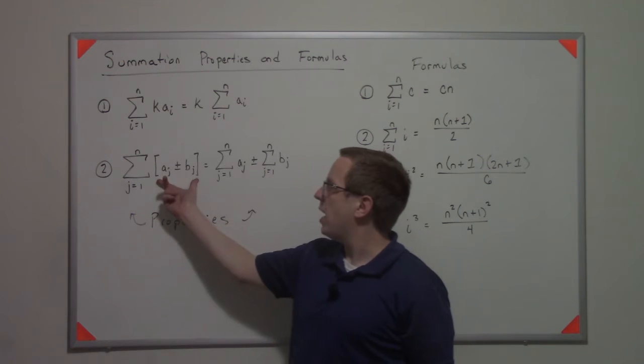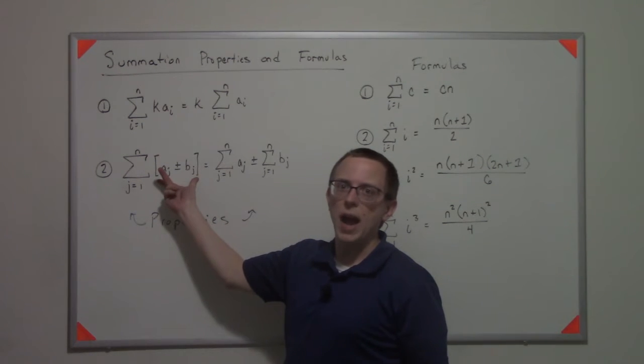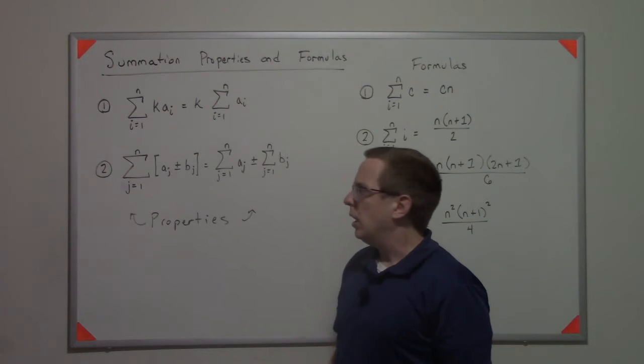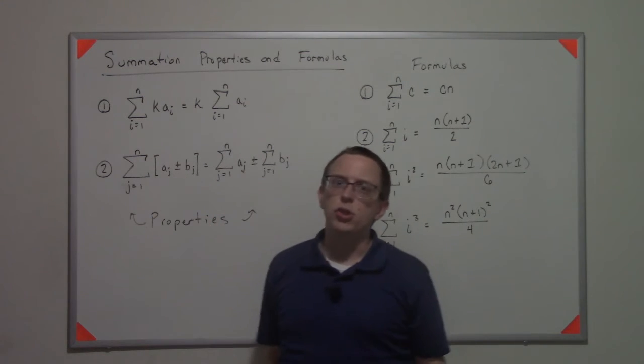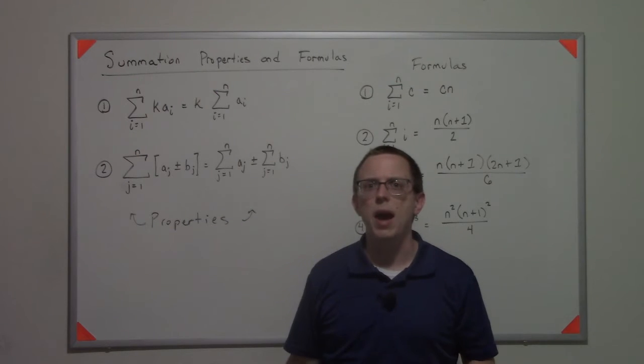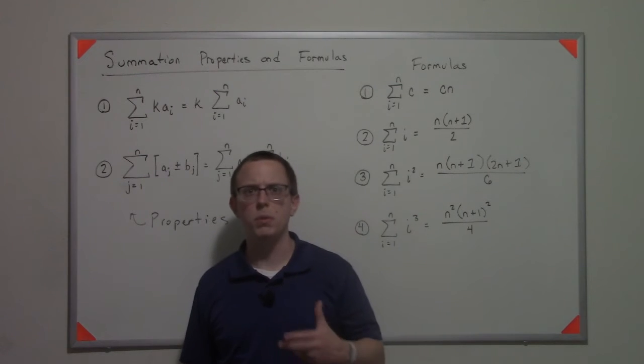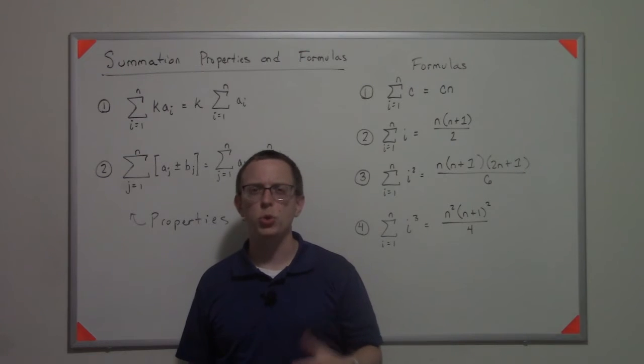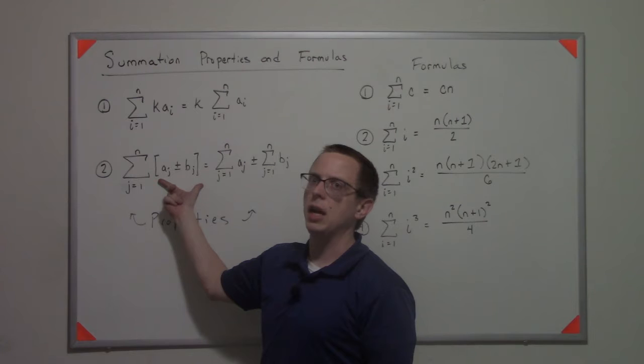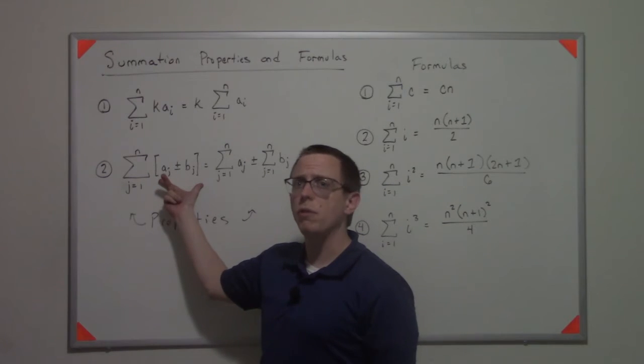The second one is that if I have two sequences that are added or subtracted, I can break them up into separate sums. That's true in the case where n is finite. If you have an infinite sum, you have to be very careful with this. It is not guaranteed to be true in the case of an infinite sum, but in the case of a finite sum...